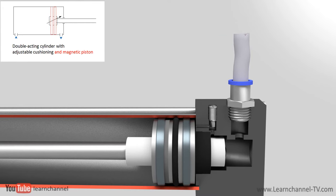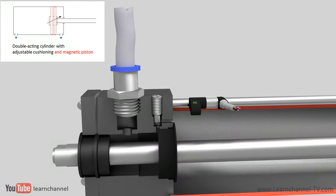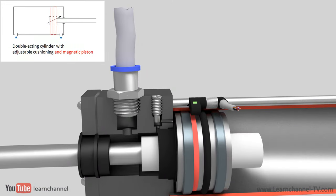Especially for sequence controls, you need to detect the end positions of the cylinder. Here, reed sensors are mainly used. To be able to use these sensors, the piston is equipped with a magnet. So when the piston approaches the reed, you get a signal to the control.